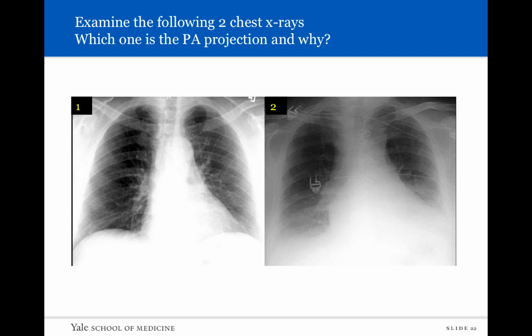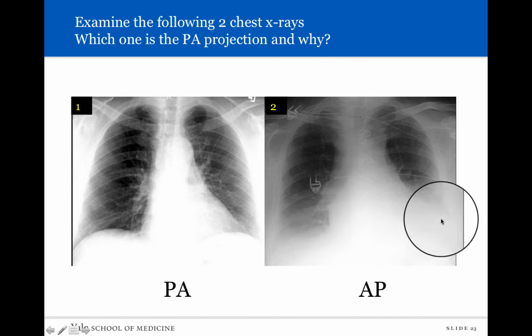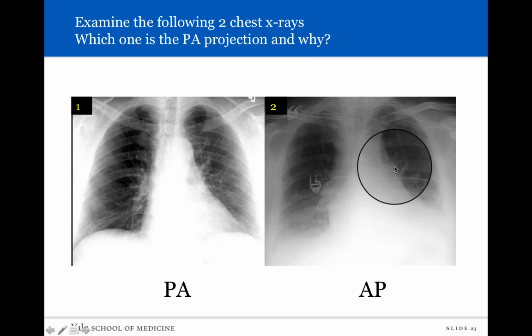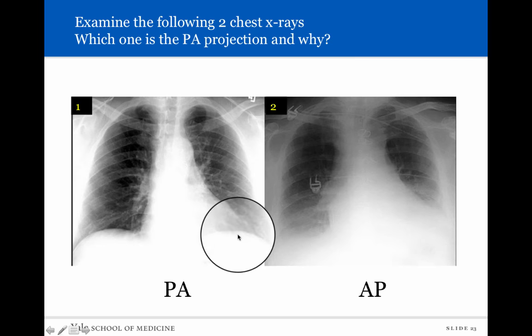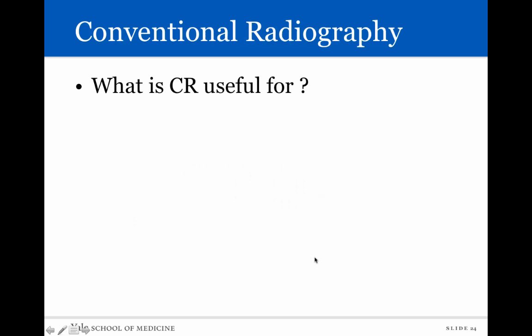Looking at two chest X-rays of the same patient taken a few minutes apart — one PA projection, the other AP — see if you can figure out which is which. The PA projection shows the heart with sharper, crisper edges. The AP projection shows the heart looking much larger, with very blurry edges, particularly on the lateral aspect. If you were to look at the AP image without context, this may seem like the patient has had too much fluid — maybe pulmonary edema — when in fact it's just a projection effect.